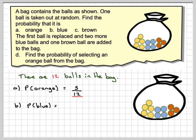The probability of blue: there are four blue balls out of 12, and that cancels down because four goes into four once and into twelve three times, so it comes down to one third.